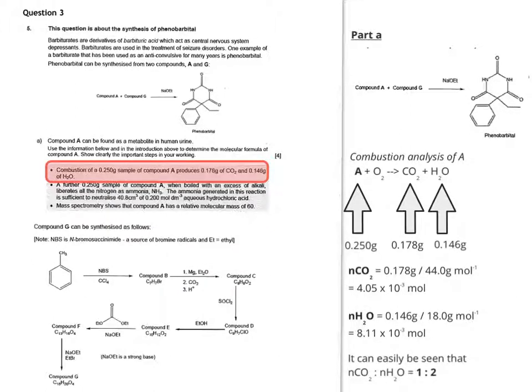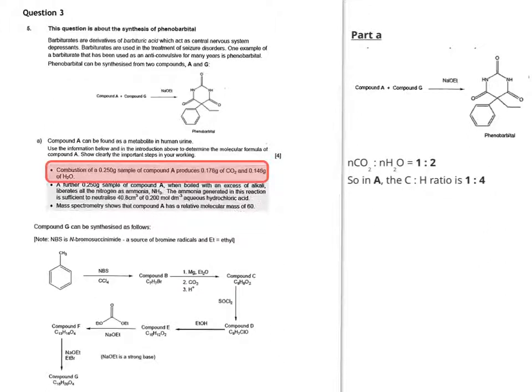You don't have to go anywhere near a calculator really to see that it's 1 to 2. So this tells us that in compound A, the carbon to hydrogen ratio in terms of atoms is 1 to 4, because one carbon dioxide has one carbon, two waters has four hydrogens.